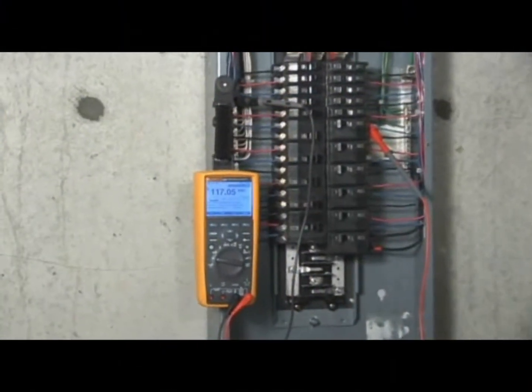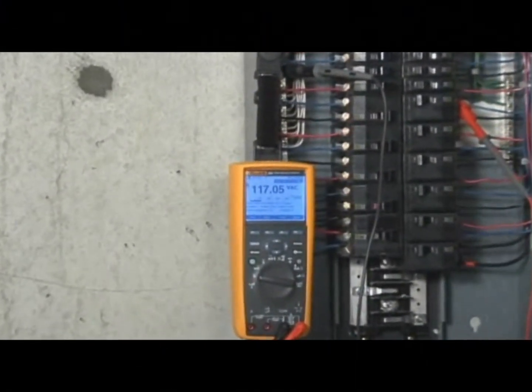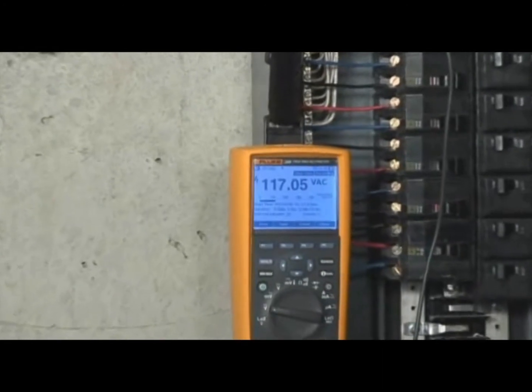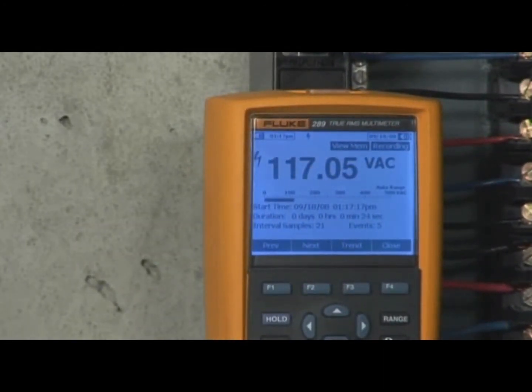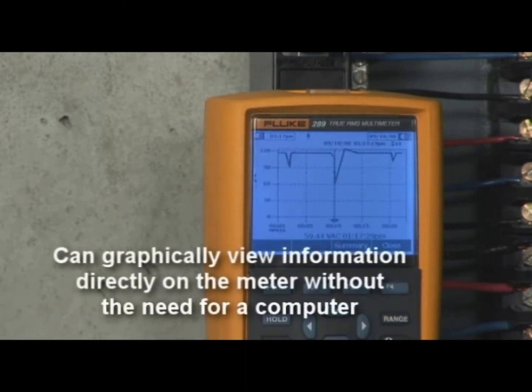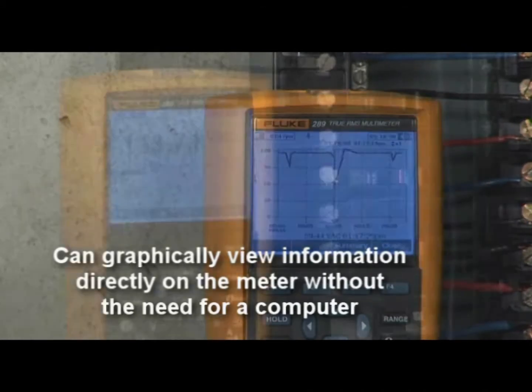TrendCapture is a major enhancement over other logging DMMs, which must upload data to a computer to graph and view the results. Unlike these other DMMs, the Fluke 280 series digital multimeter has the ability to graphically review information on the meter immediately after the recording session is completed.